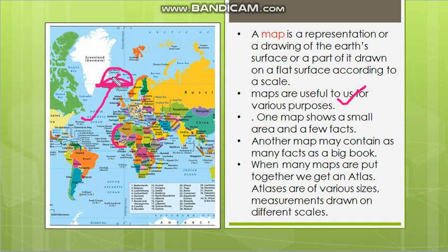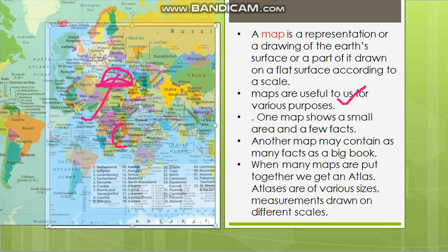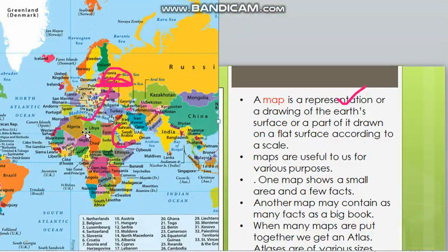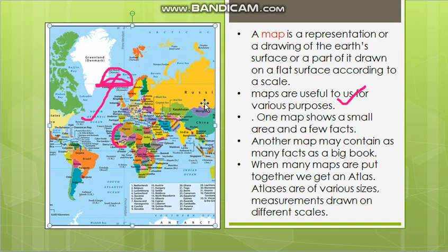The scale is important because without it, the map is not fully accurate. For example, if the scale is ideal, the city and the district would be included. It is very important to understand the nature of the scale. You can also see where the map is located using the scale.